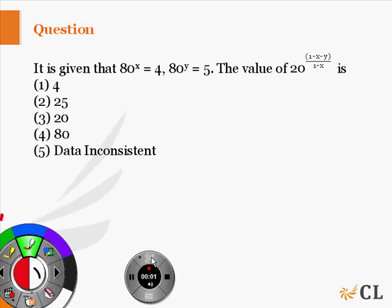The question is: it is given that 80^x = 4 and 80^y = 5. We need to find the value of 20 to the power (1 - x - y) upon (1 - x).